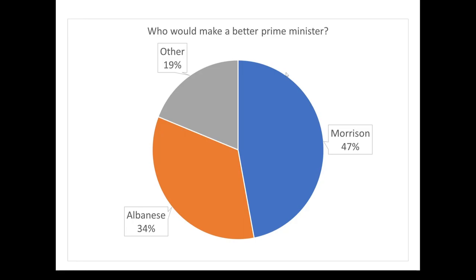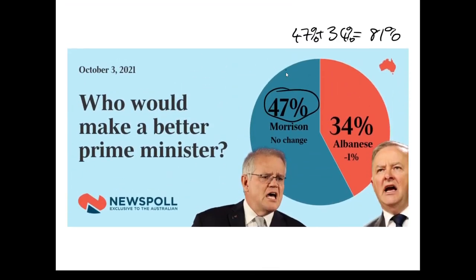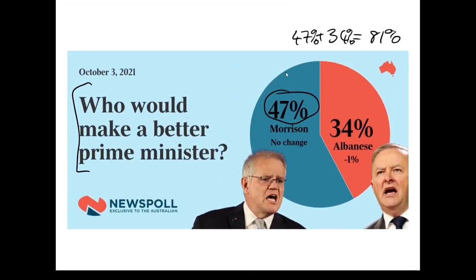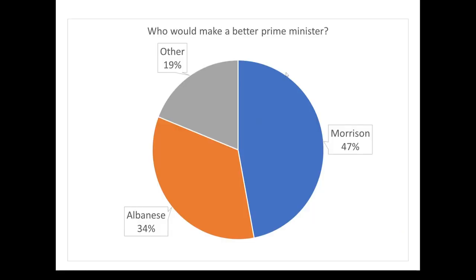The way it's drawn here, it looks like Scott Morrison has more than half of the responses are saying he's a better prime minister, but 47% is not more than half. If you do include that 19%, here's what you get instead. Suddenly it doesn't look quite so good for either Scott Morrison or Anthony Albanese. It looks like there's this massive wedge, nearly 20% of the population, who think both of them kind of suck.